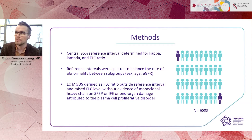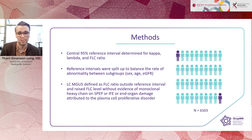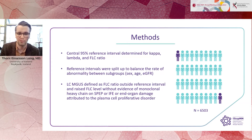We defined light chain MGUS as an abnormal FLC ratio and abnormal absolute level of the involved free light chain, without evidence of heavy chain involvement or end-organ damage from a plasma cell proliferative disorder.